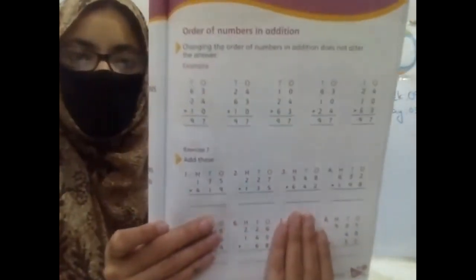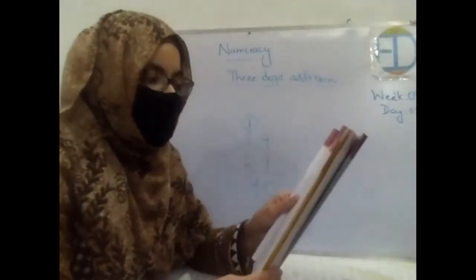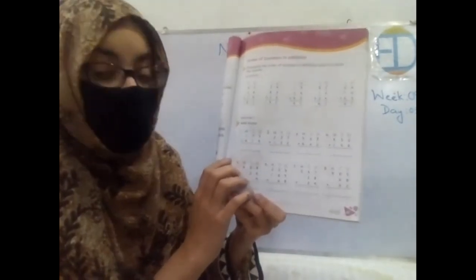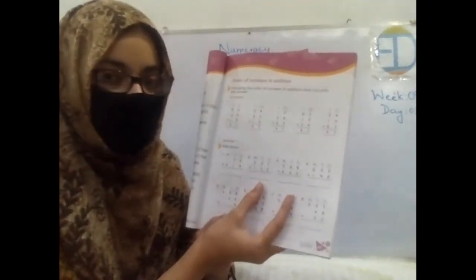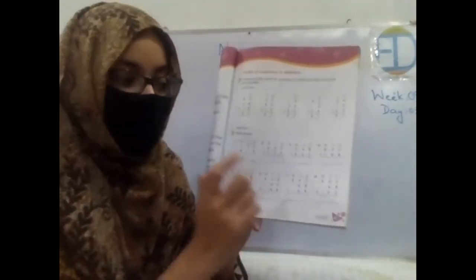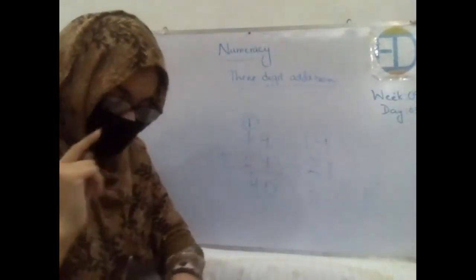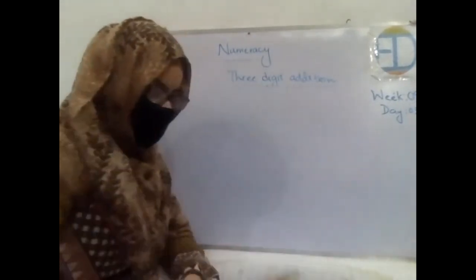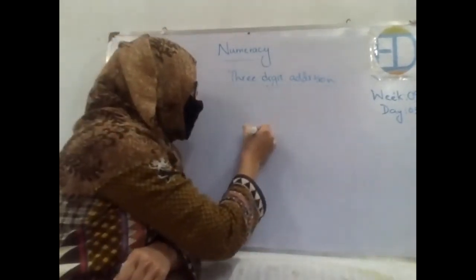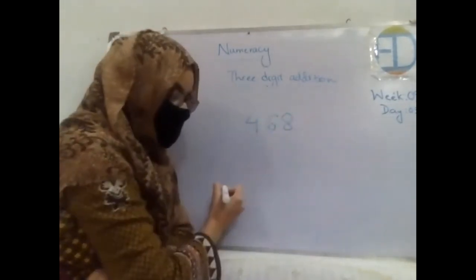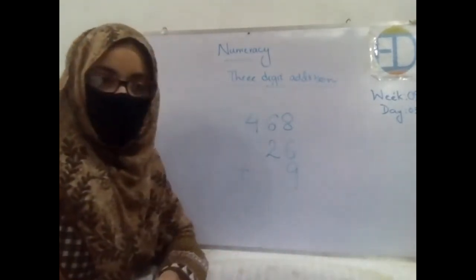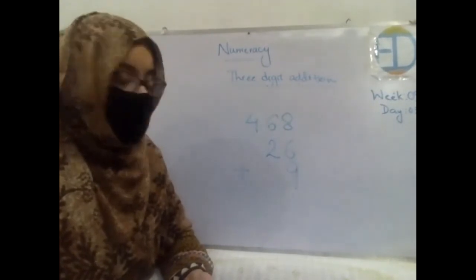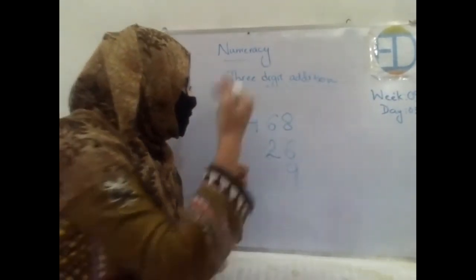Now I want all of you to open your book to page number 47. There is exercise seven which we will be doing together. The questions are three-digit additions. The first row you will solve by yourself since we've practiced it over three classes, but I'll help you with the next part. Look at the board — there are three rows: 468, then 26, then 9. We haven't practiced three-row addition before, so we'll do this together. Always start from the right-hand side — let's first write their place values.